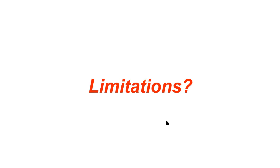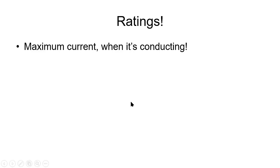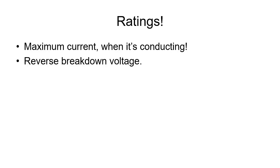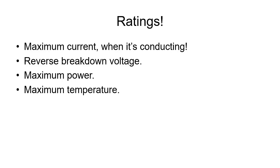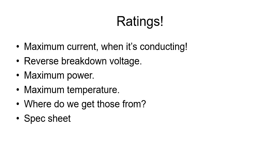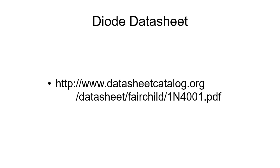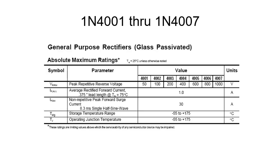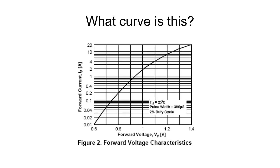Limitations of the diode: every physical diode has some limitations. These include the maximum forward current when conducting, the maximum reverse voltage that can be applied, the maximum power it can dissipate, and the maximum operating temperature. We obtain these ratings from the spec sheet — the data sheet — which can be found online. From the data sheet we also find the exponential I-V curve plotted on semi-logarithmic paper, which is why it looks different but is still the exponential curve.